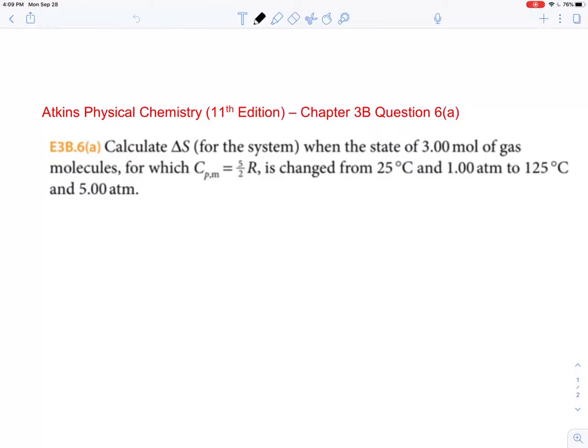This is asking for the entropy change of the system when the system has 3 moles of gas with a constant pressure heat capacity of that value. The state changes from certain initial temperature and pressure to final temperature and final pressure. It doesn't say whether the change has been reversible, irreversible, isothermal, or adiabatic. It doesn't say anything.